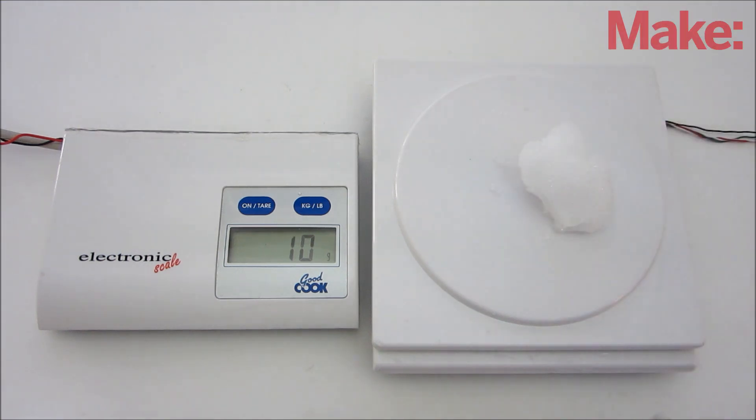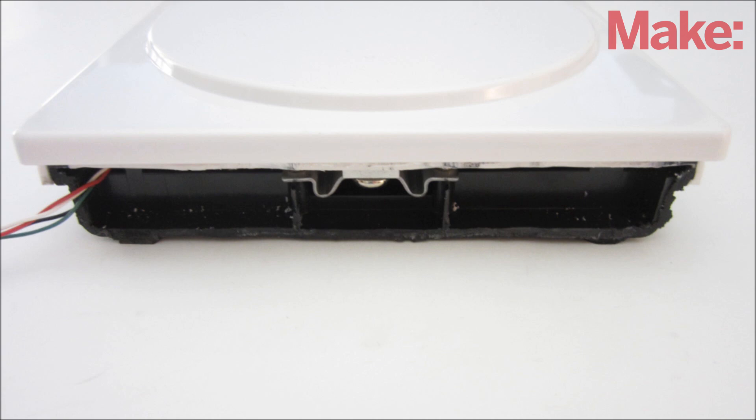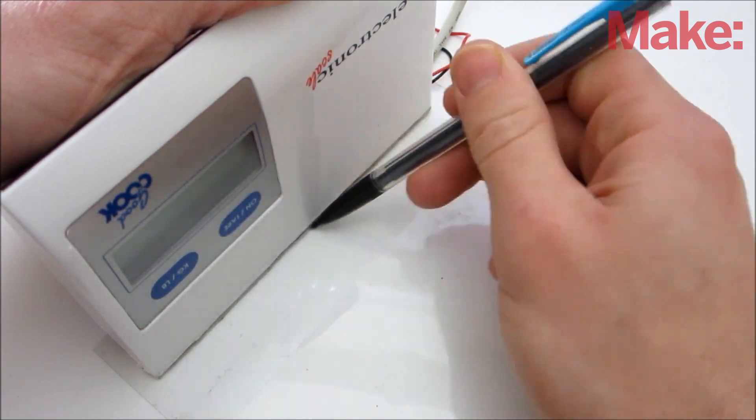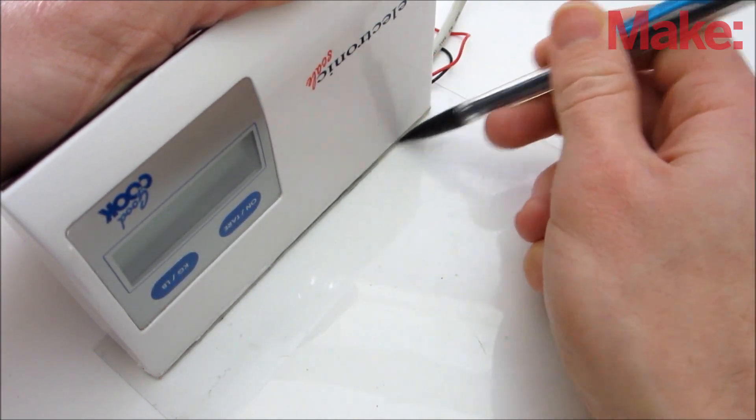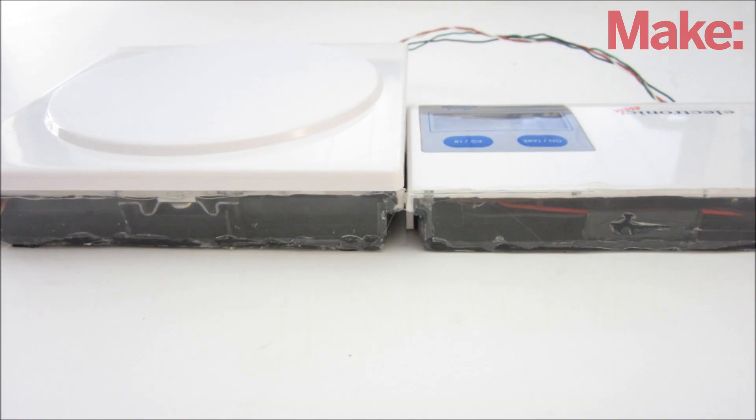At this point, you should test the system to make sure that everything is still working properly. After cutting the housing, each section is open on one side. To seal the opening, I traced the outline onto a sheet of clear plastic, then I cut it out and attached it to the opening with hot glue.